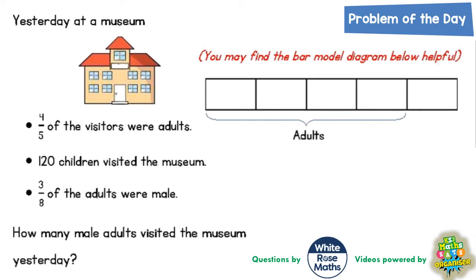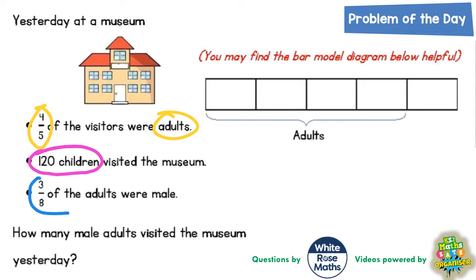Welcome problem-solving fans to another problem of the day. This one is all about yesterday at a museum. We've got four-fifths of the visitors were adults, 120 children visited the museum, and another clue that says three-eighths of the adults were male. How many male adults visited the museum?